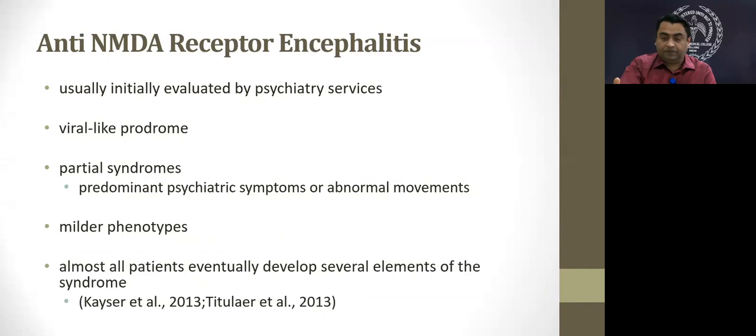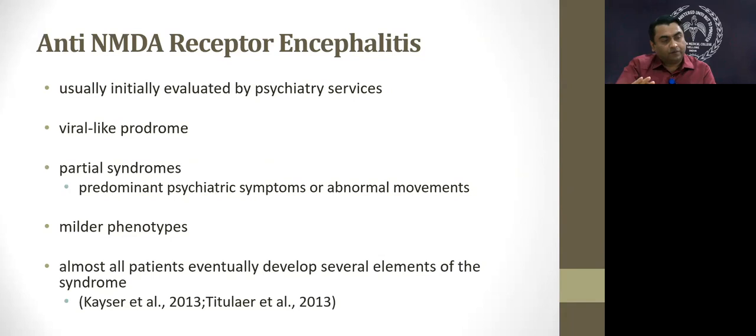These patients are typically initially evaluated under psychiatry. Importantly, when you go back to the history, there is usually a viral prodrome within a week or two prior to presentation. It may also occur with partial syndromes — psychiatric only, or abnormal movements only — and may present with milder phenotypes not easily clinically recognizable. Without treatment, however, almost all patients eventually develop almost all elements of the full syndrome.